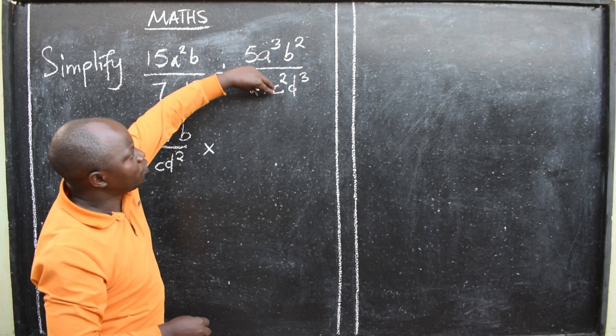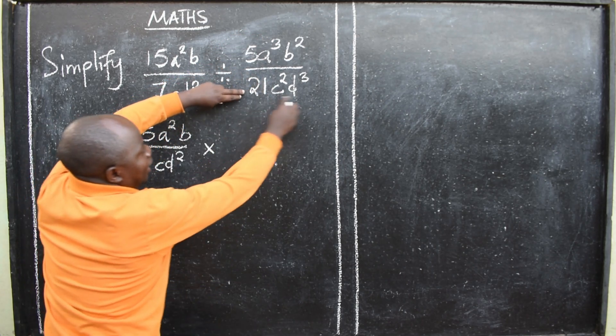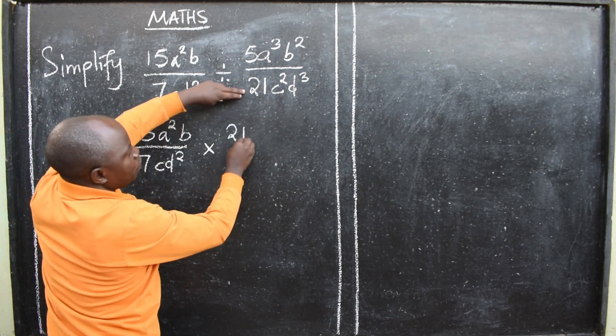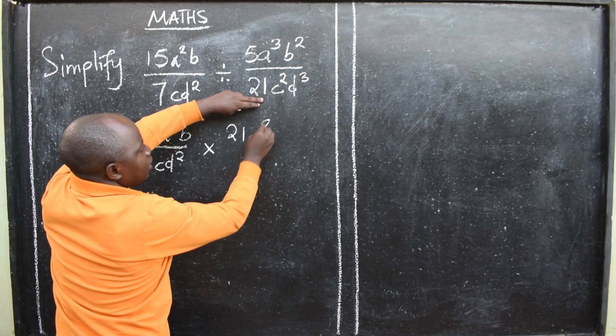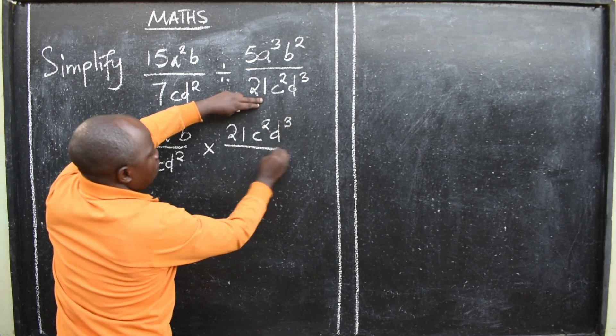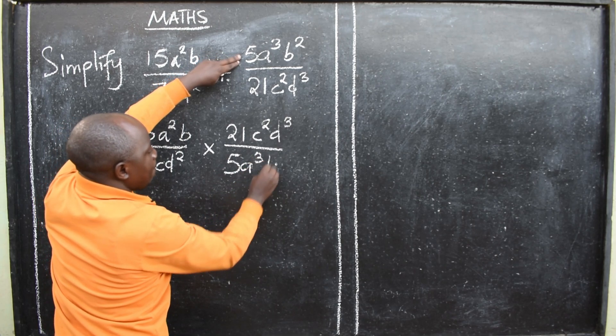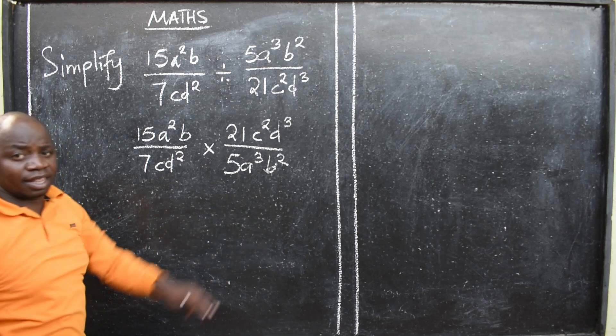The denominator will be numerator and the numerator will be denominator. So what I have here on top is 21c² d³ over 5a³ b².